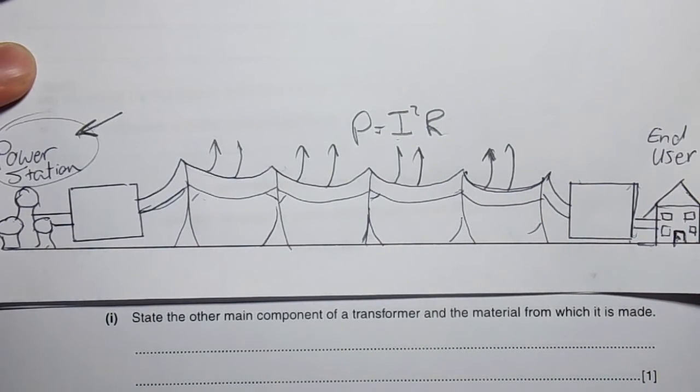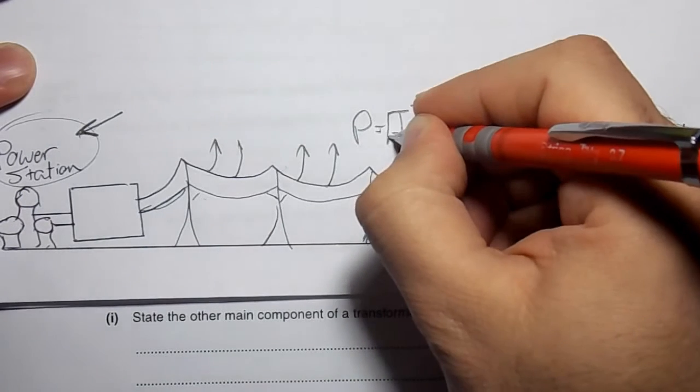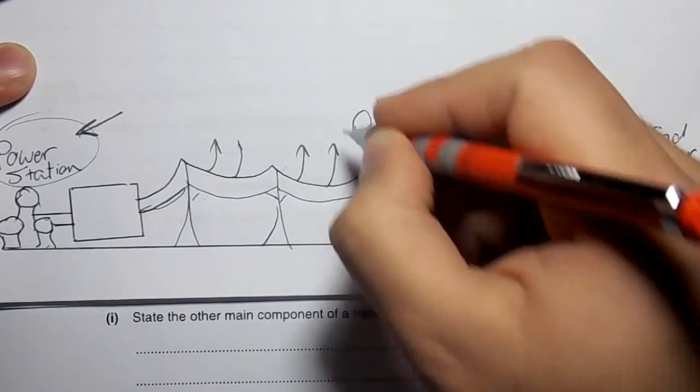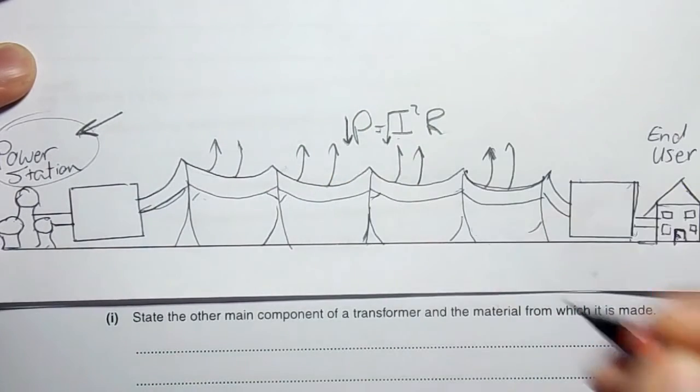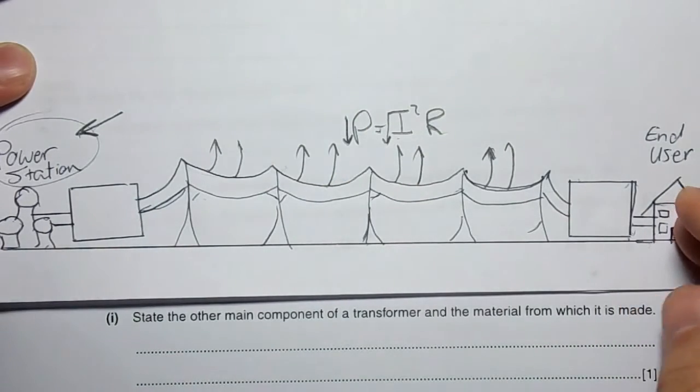What does this mean? It means that if I can somehow reduce the current in the wire, the amount of heat or heat loss in the wire will decrease.